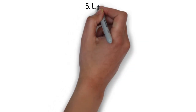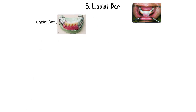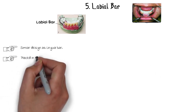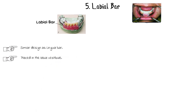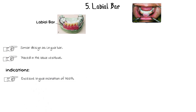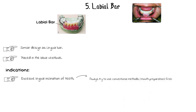The labial bar is placed on the labial or buccal portion with the same design as the lingual bar, with the bulkiest portion located inferiorly, at least 4 mm from the gingival margins, placed in the labial vestibule at the junction of immobile and mobile mucosa. It is rarely recommended and only used in specific situations, such as extreme lingual inclination of mandibular teeth that does not allow placement of a conventional lingual bar.